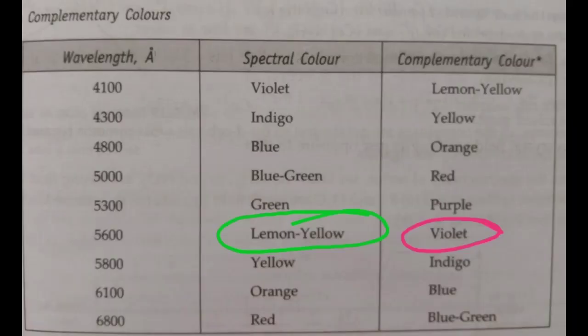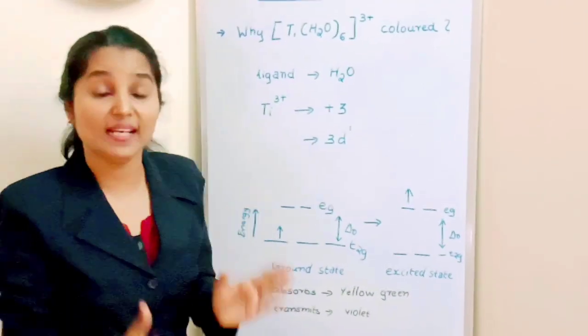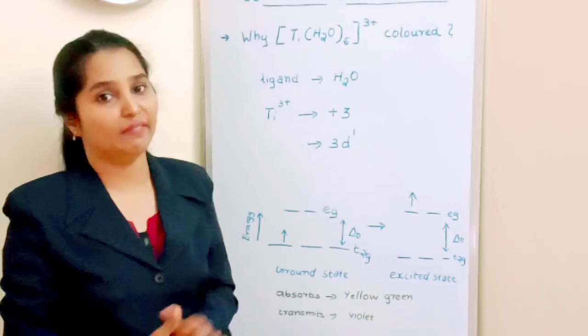The complex Ti(H2O)6^3+ appears violet in color. The violet color is generated from the wavelength left over, its complementary color, as lemon yellow or yellow-green light was absorbed by the complex. So this coordination entity appears violet in color.